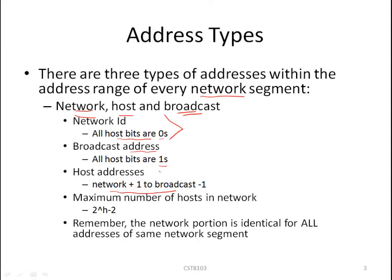Host addresses — the addresses that we assign to devices like servers, printers, routers, computers, laptops, smartphones, etc. — range between the network address plus one to the broadcast minus one. The maximum number of hosts in a network segment is given by the formula 2 exponent H, where H represents the number of host bits, minus 2. We subtract 2 because we remove the network ID and the broadcast address as they are not usable. The result of that formula is the maximum number of hosts that can exist in that network segment. Remember that the network portion is identical for all addresses of the same network segment.